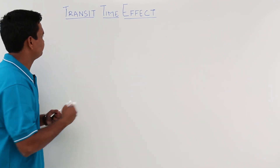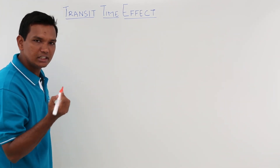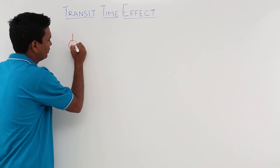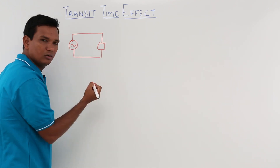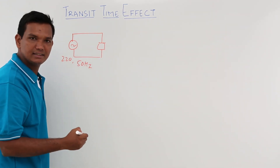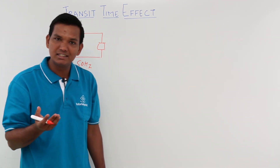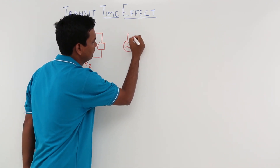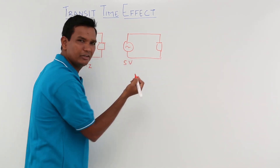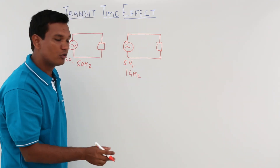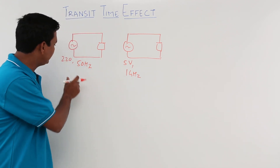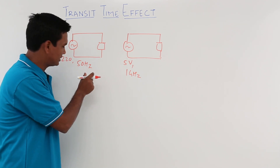Let us understand this with a simple example. In network analysis, the voltage and frequency we deal with is 230 volts and 50 Hz. In the network, the load sees 220 or 230 volts at 50 Hz. But in AC high-frequency analysis, the frequency is in the order of gigahertz — for example, 5 volts at 1 gigahertz. In small network circuits as seen in network classes, it would be around 50 Hz.